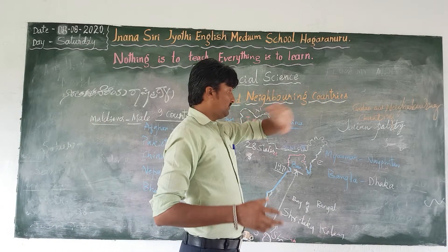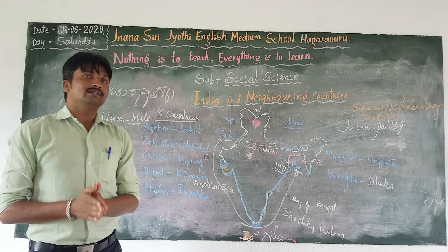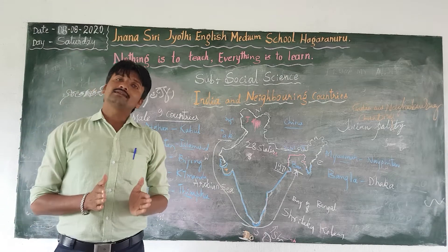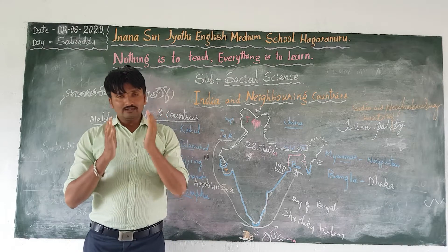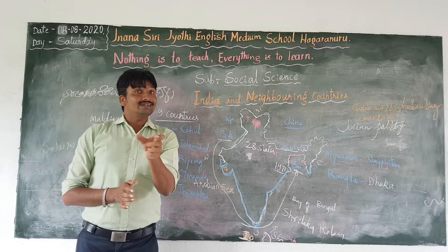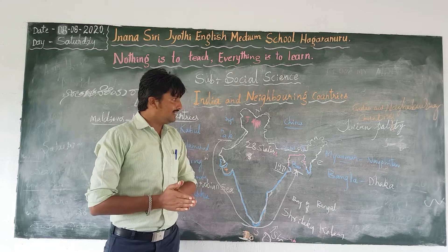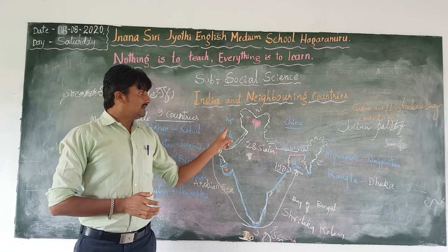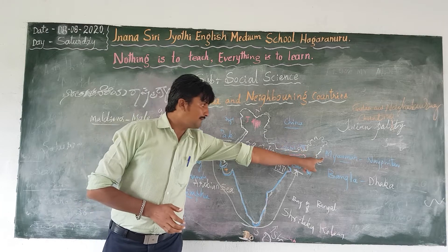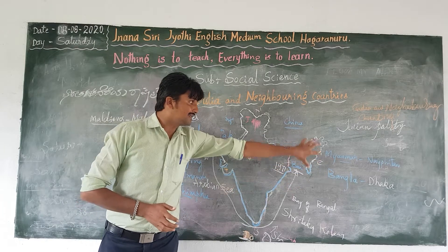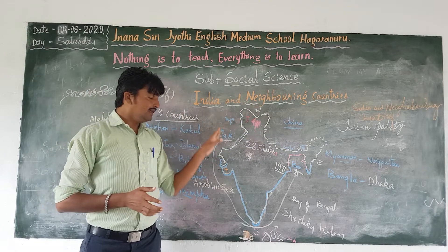Neighboring countries of India — how many neighboring countries are there? Totally there are nine neighboring countries of India. A few countries share their borders with India. The countries are Pakistan, Afghanistan, China, Nepal, Bhutan, Myanmar, and Bangladesh. These are the countries that have shared their borders with India.